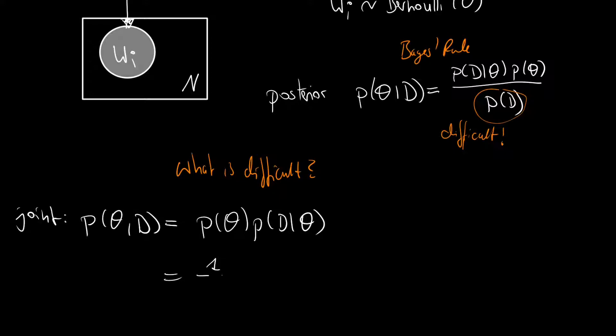This can be factorized as P of theta times P of the data set given theta, and we can then plug in what we have. P of theta was the beta distribution, so it's 1 over the beta function of alpha and beta times theta to the alpha minus 1 times theta to the beta minus 1.